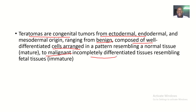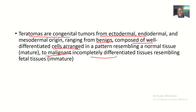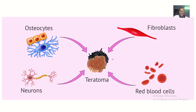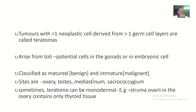Teratomas can range from benign to malignant cells that are completely different, resembling fetal or immature tissues. So these teratomas range from being benign to malignant, in the sense that malignant cells don't look like the cells that used to be there — they look totally different from the original cells.